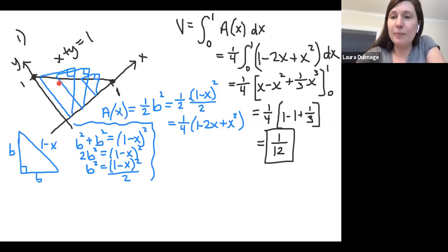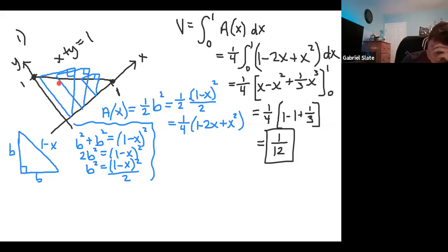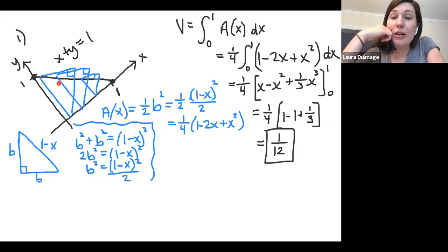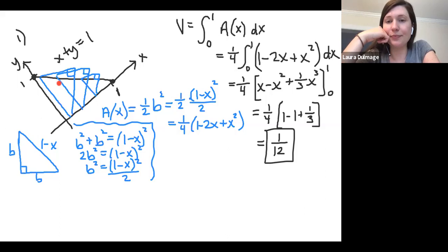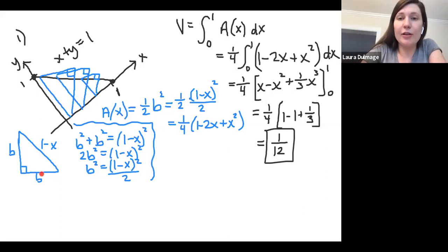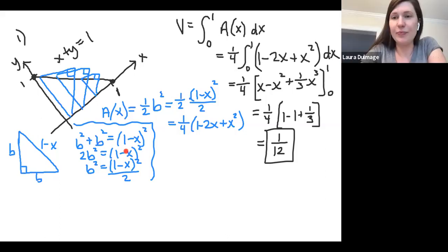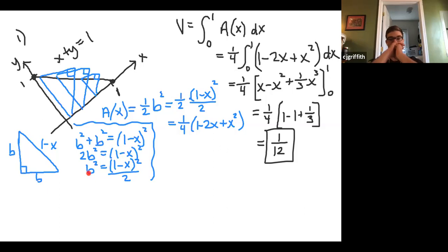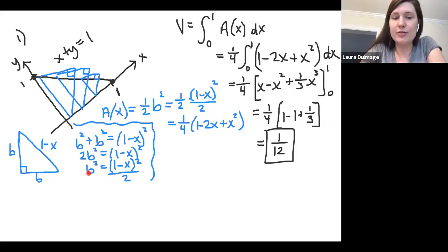A student asks: could one of the sides — not necessarily the hypotenuse — be the function, like if the triangle was flipped? The answer is yes, if the question was written differently. You would still use the Pythagorean theorem or the shortcut shown at the start, which essentially fast-tracks the Pythagorean theorem.